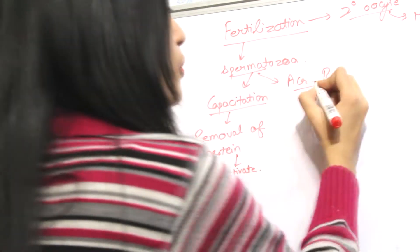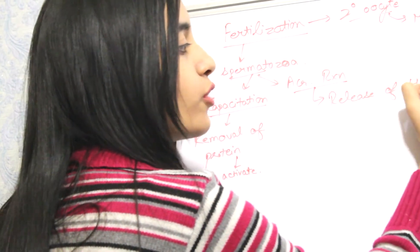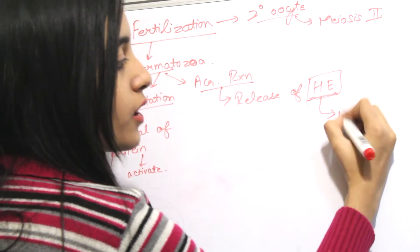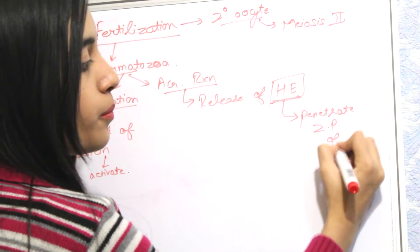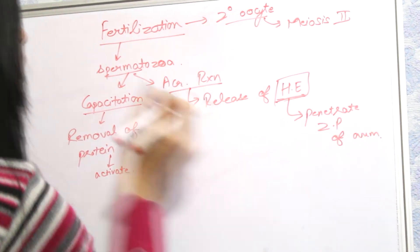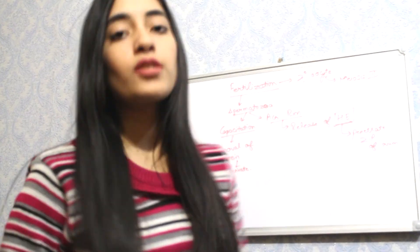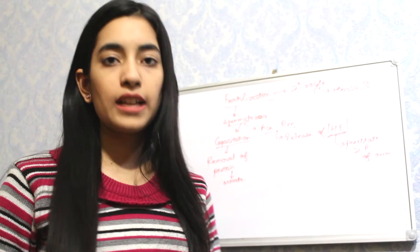The acrosome reaction is the release of hydrolytic enzymes. These hydrolytic enzymes penetrate the zona pellucida of the ovum, allowing the sperm to go inside and fuse with the egg, completing the process of fertilization.